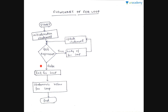In the flowchart: initialization statement runs first, then the test expression is evaluated. If it is true, the body of the for loop executes, followed by the update statement, and then the test expression is checked again. This loop continues until the test expression evaluates to false, at which point the loop exits and the statements below the loop are executed.